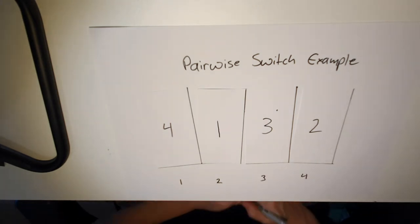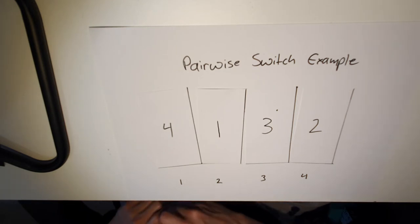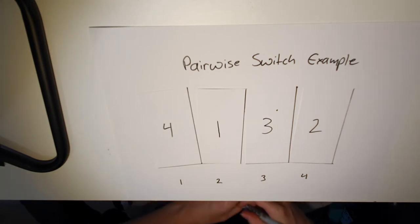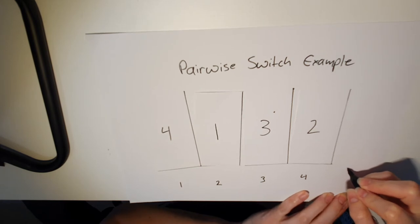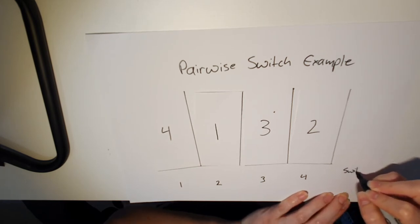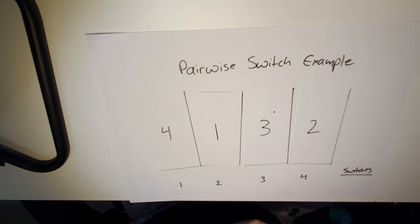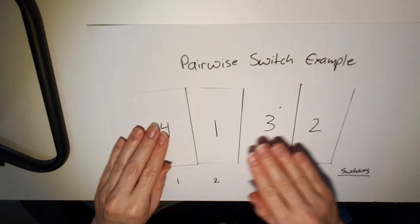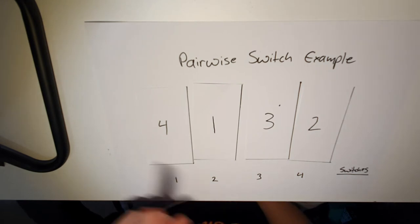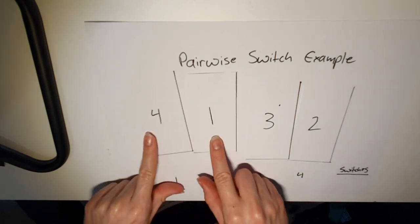We also want to know how scrambled the cards are by counting how many switches we make. So I'm going to write down switches here so that we can keep track of how many switches we make. So let's start sorting our cards. We start with the first pair on the left.